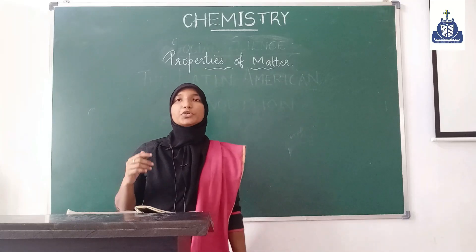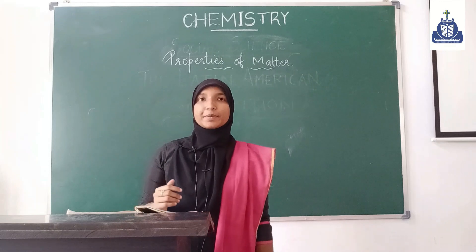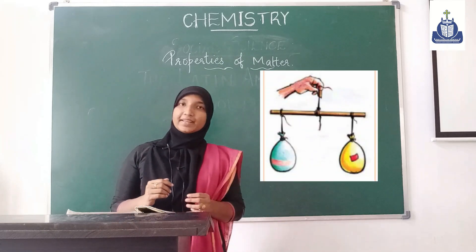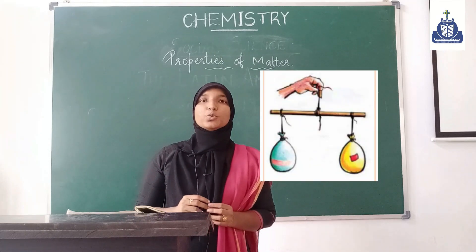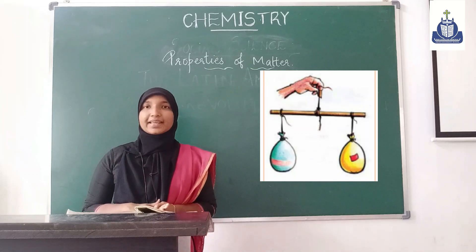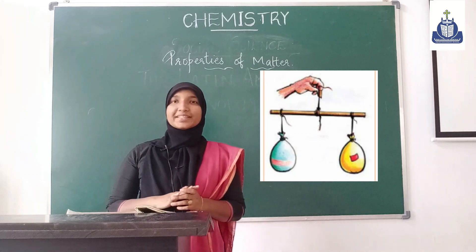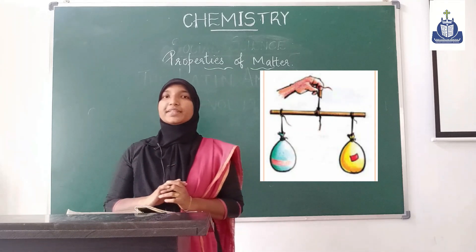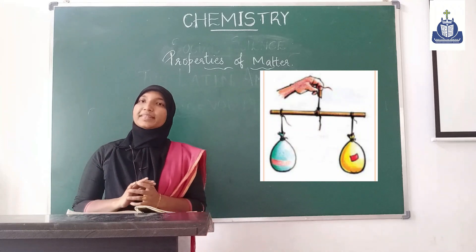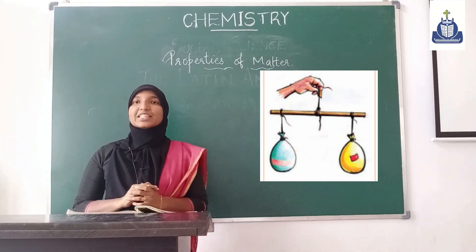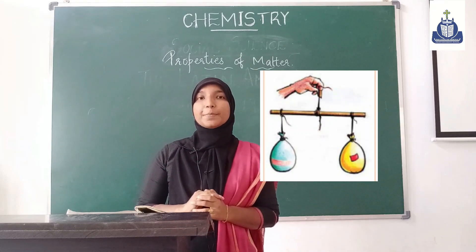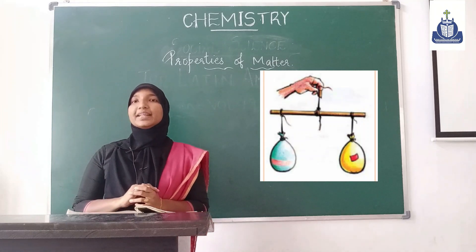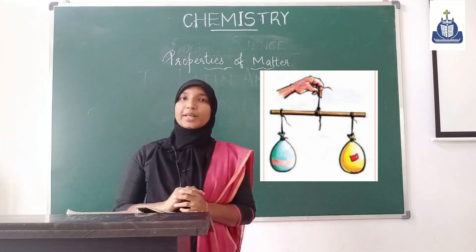From this experiment, we can understand air requires space to occupy. Now let us move on to another experiment. Hang two balloons filled with air at the two ends of a 30 cm scale. Fix a piece of cello tape on one of the balloons with the help of a thread. Suspend the scale in a balanced position, then pierce the balloon with a needle on the cello tape.